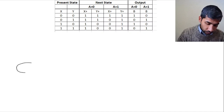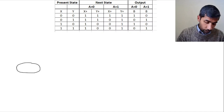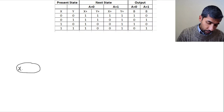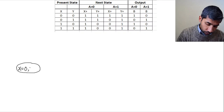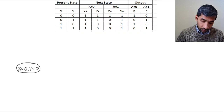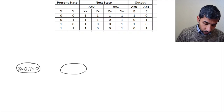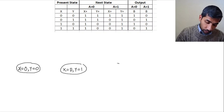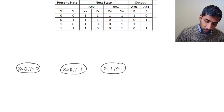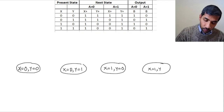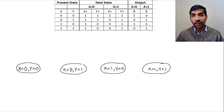Let's draw the states. The states that we have are defined by x equal to 0, y equal to 0 — so that's going to be one of your states. The other state is x equal to 0, y equal to 1. Then you have x equal to 1, y equal to 0. And finally, you have the state x equal to 1, y equal to 1. So these are the four states that you have.